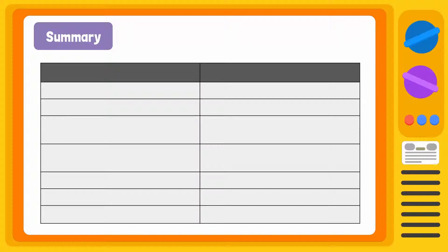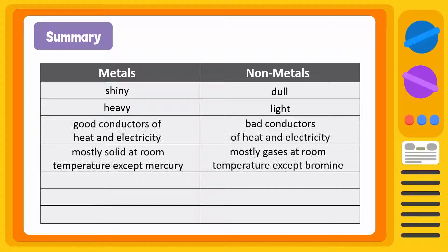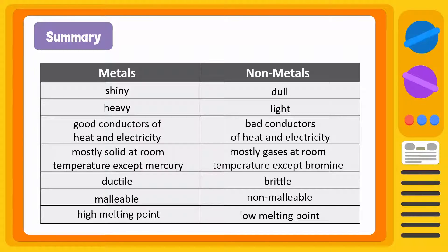Let's summarize what we have learnt today. Scientists sort elements into two large categories of metals and non-metals based on their properties. Metals and non-metals generally have different physical properties. This table summarizes the properties of metals and non-metals.